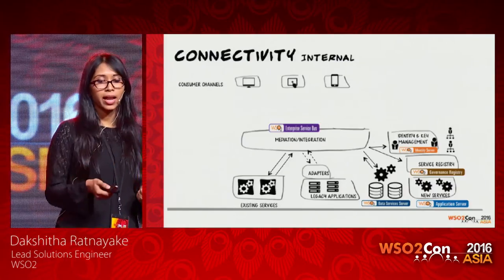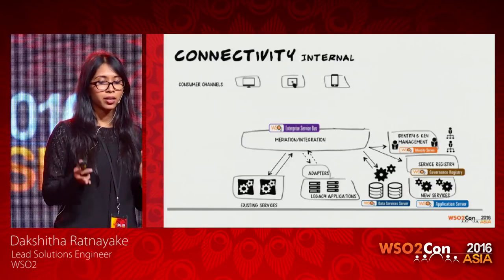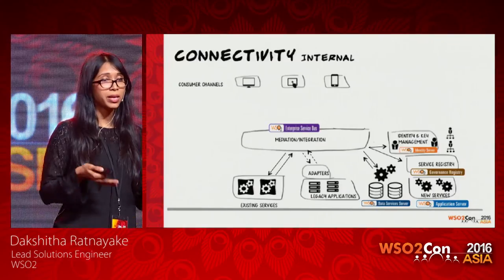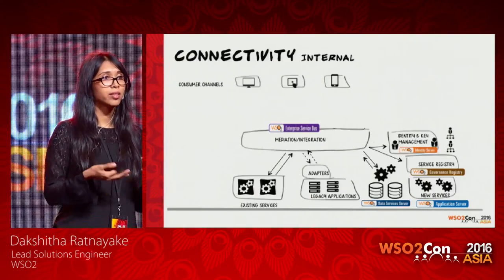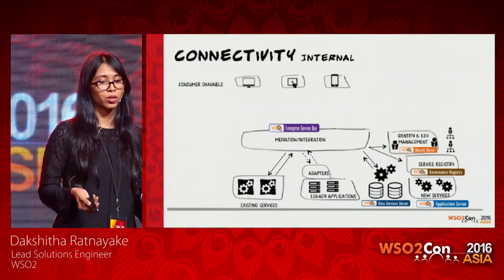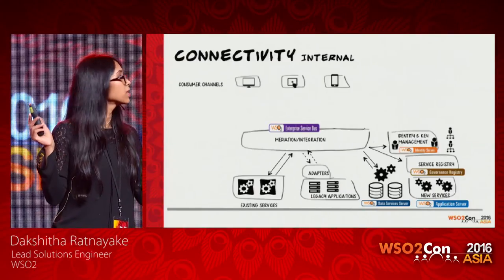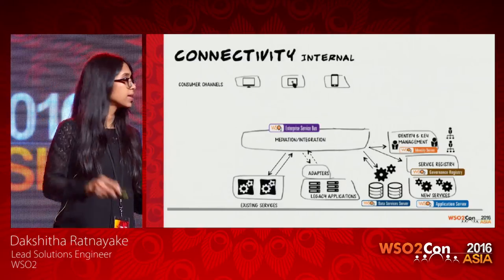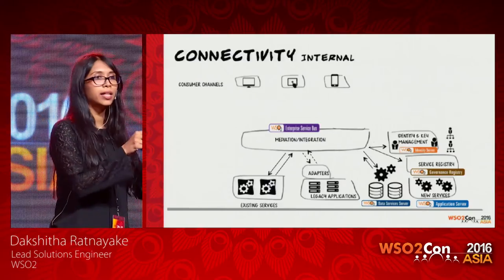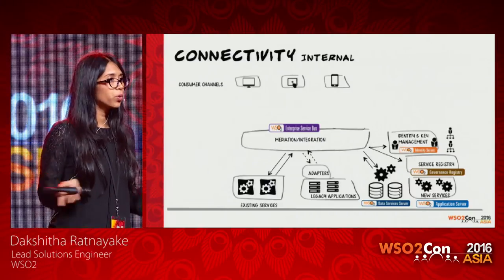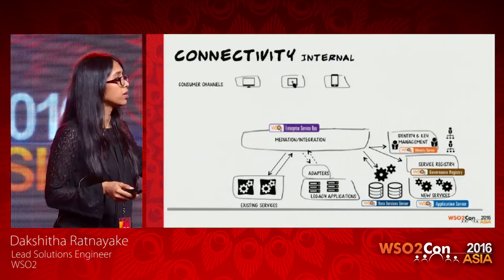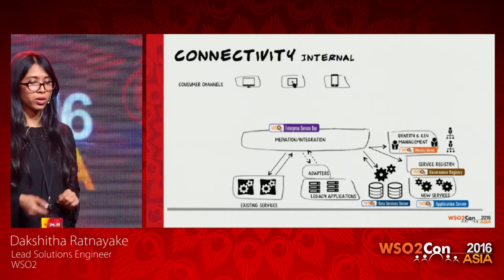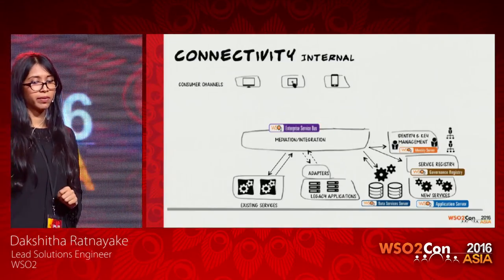The ESB supports various transports, various protocols, and has support for adapters. We already have adapters for legacy applications like SAP and HL7. If you have other legacy applications, you can extend the ESB to create adapters and connect to those. The ESB can also act as a central gateway — a message gateway or security gateway — and dispatch requests to the relevant components.